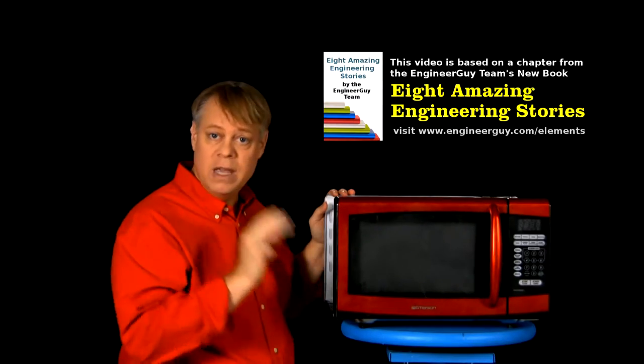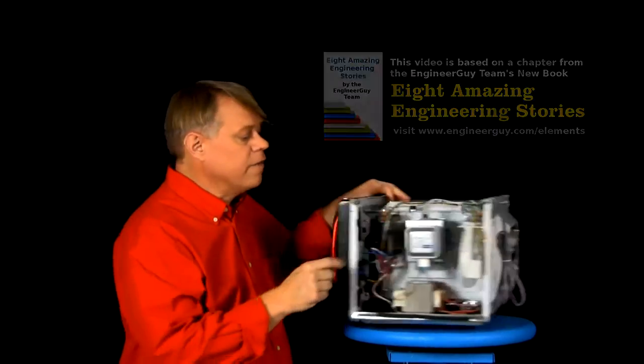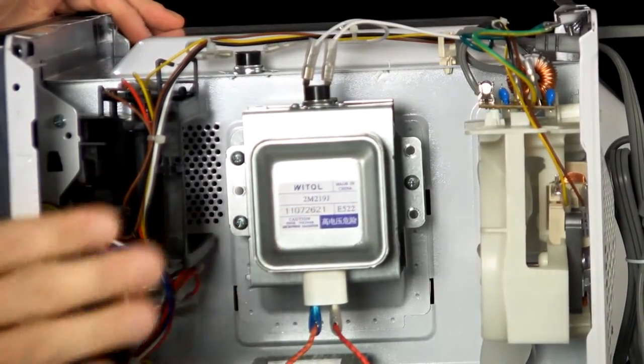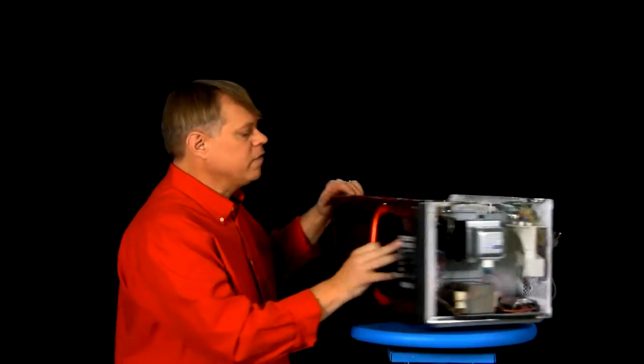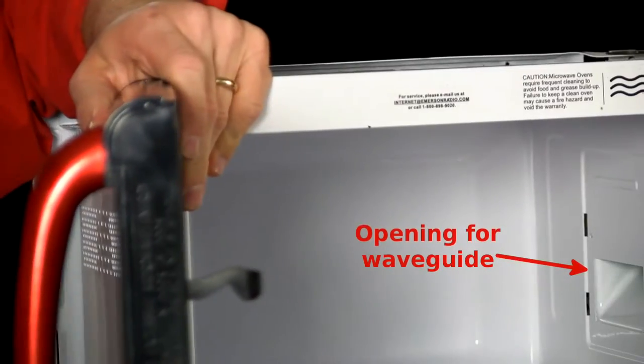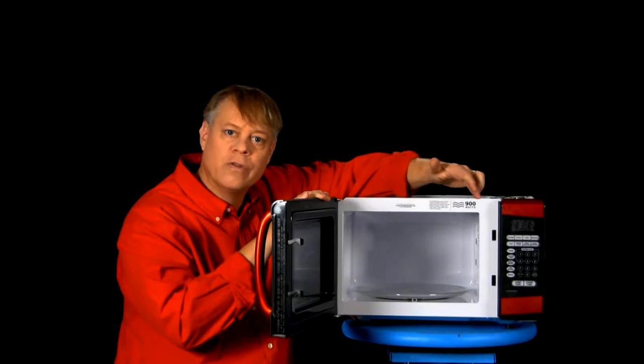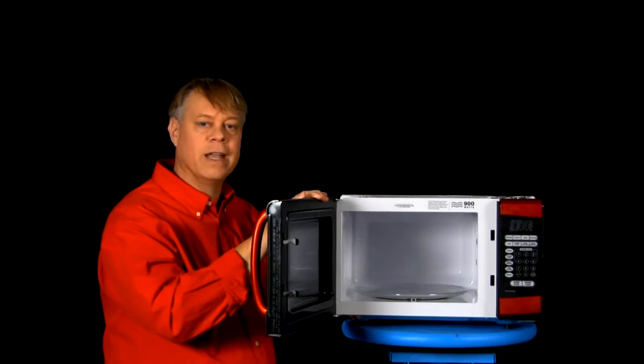A microwave contains three main components: a vacuum tube called a magnetron that generates the energy that heats food, a waveguide hidden in the wall to direct that energy to the food, and a chamber to hold the food and safely contain the microwave radiation.